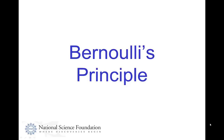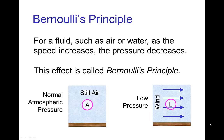Bernoulli's principle tells us that for a fluid like air or water, as the speed of the fluid increases, the pressure in the fluid decreases. For example, if we have air and it's not moving, then it's at normal average atmospheric pressure, but if the wind is blowing, the pressure in the air will actually be lower.